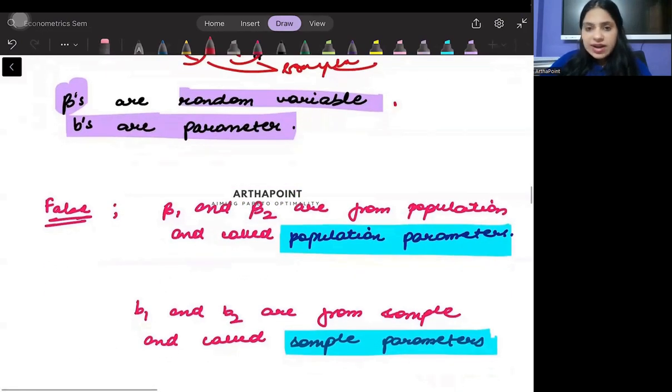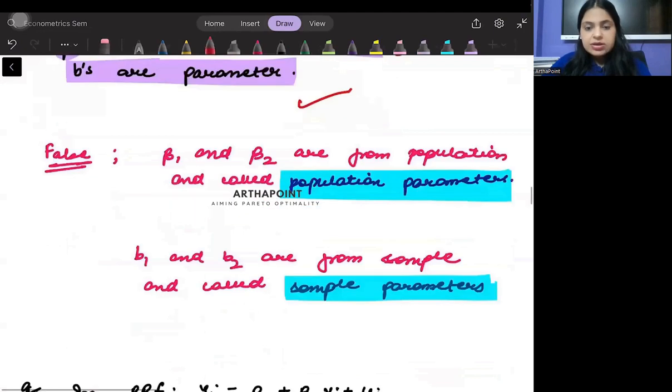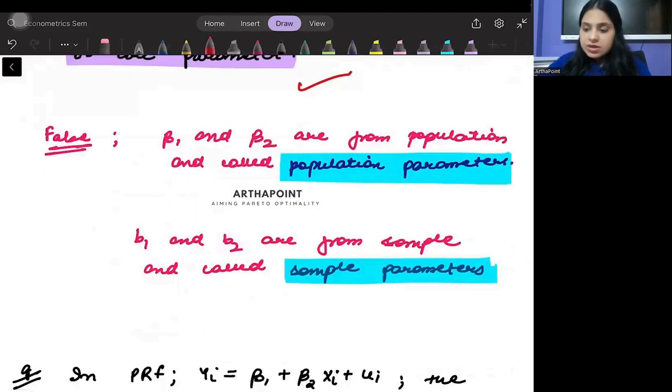So it is incorrect to say that one of them is the random variable and other is the parameter. Both of them are parameters. Beta 1 and beta 2, they are from population and therefore they form what is called as population parameters.